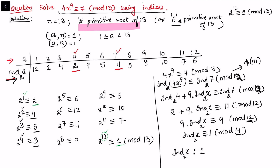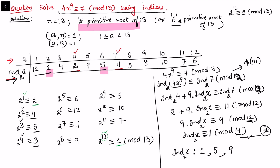Now index of x with respect to 2 must be congruent to 1 mod 4. Looking at our list of indices, the values that satisfy this are 1, 5, and 9. These are the three possibilities among the indices we calculated. Once we know the satisfying indices, we look back at the corresponding integers: index 1 corresponds to x = 2, index 5 corresponds to x = 5, and index 9 corresponds to x = 6. So x is congruent to 2, 5, or 6 mod 13.